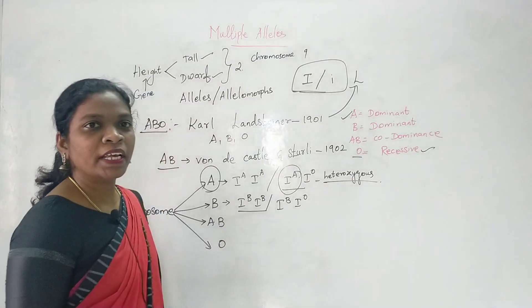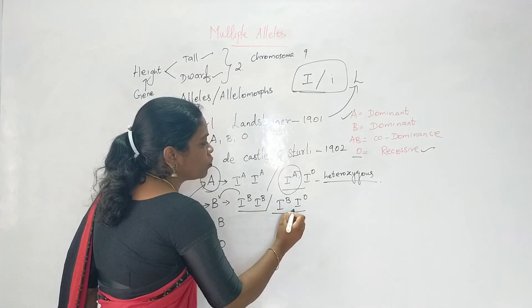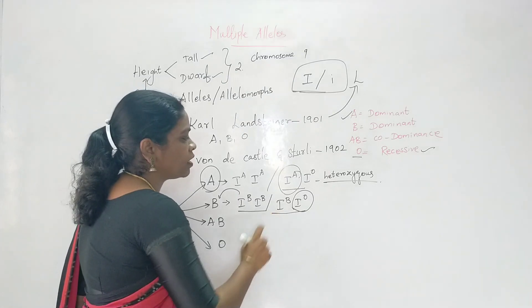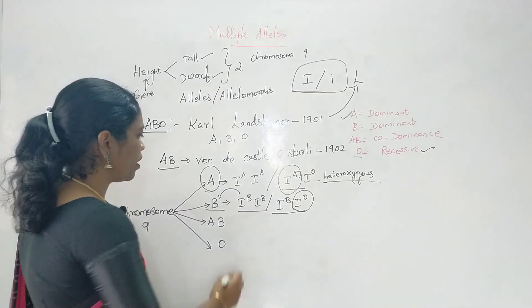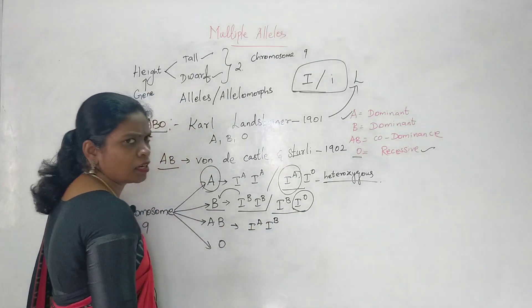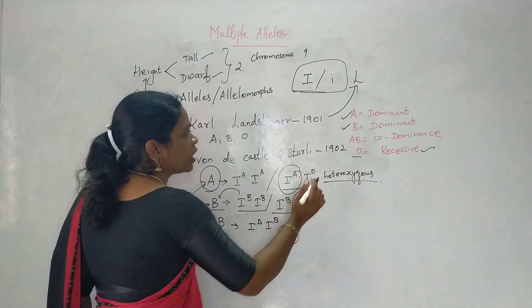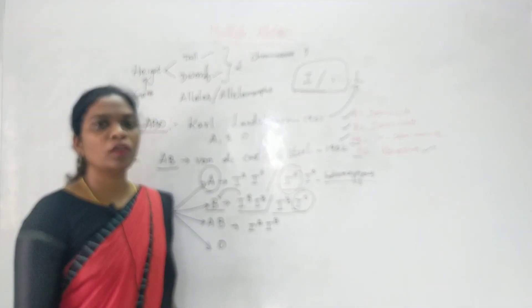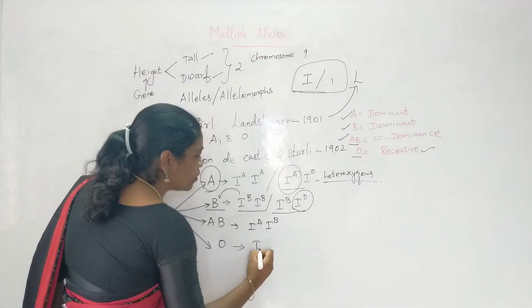For blood group B, in the homozygous or heterozygous condition, i^o is recessive so it is not expressed — I^B expresses and blood group B is exhibited. For blood group AB, the genotype is I^A I^B. Since both A and B are dominant, they are expressed together and undergo co-dominance.